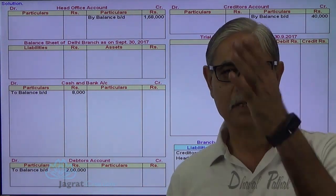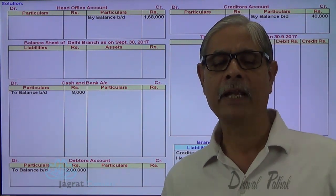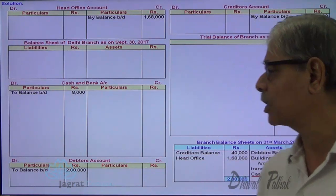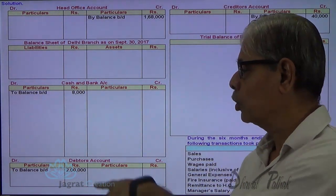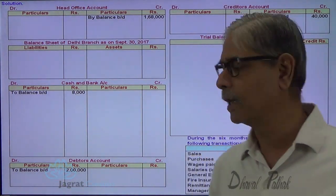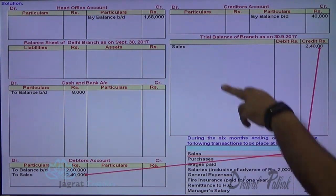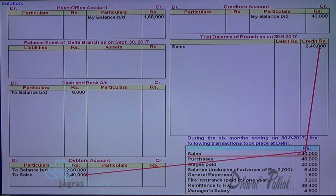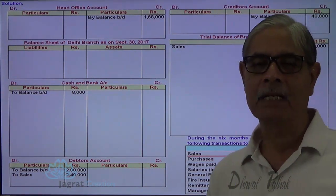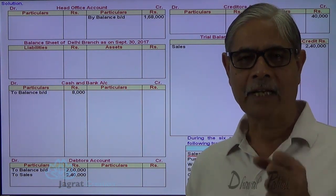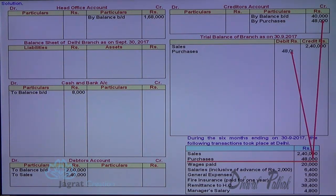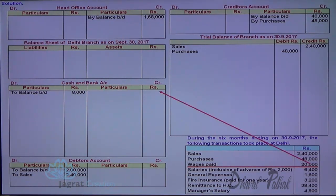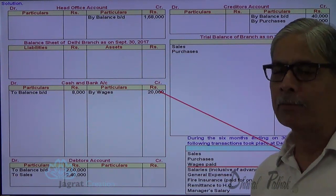After recording opening balances, I will record the transactions for six months, as I have generally done in the chapter of single entry by conversion method. Sales are presumed to be credit sales, so debtors account is debited and sales account is credited — sales will appear as a credit balance in the trial balance. Purchases are presumed to be on credit, so purchase account is debited and creditors account is credited; 48,000 goes to creditors. Wages paid is an expense — payment is credited in cash and bank; 20,000 wages appear in the trial balance.